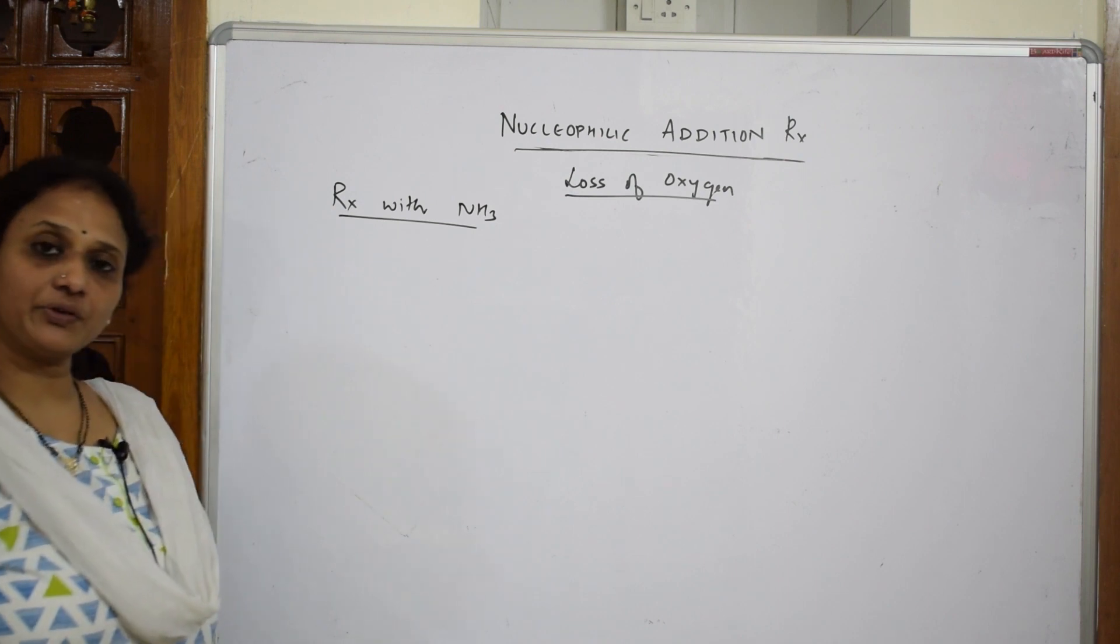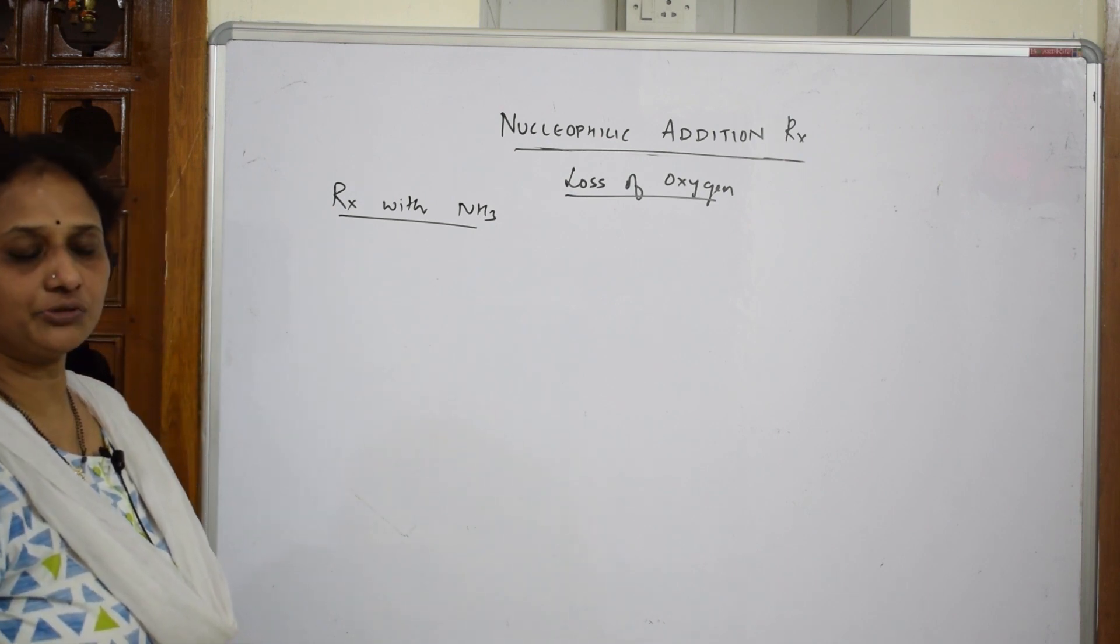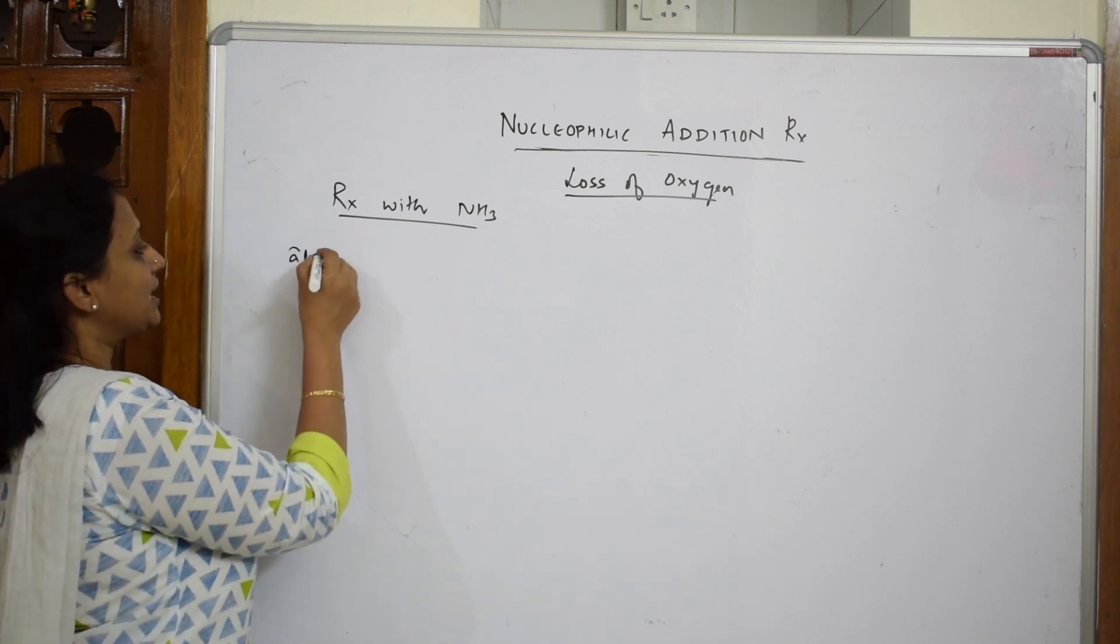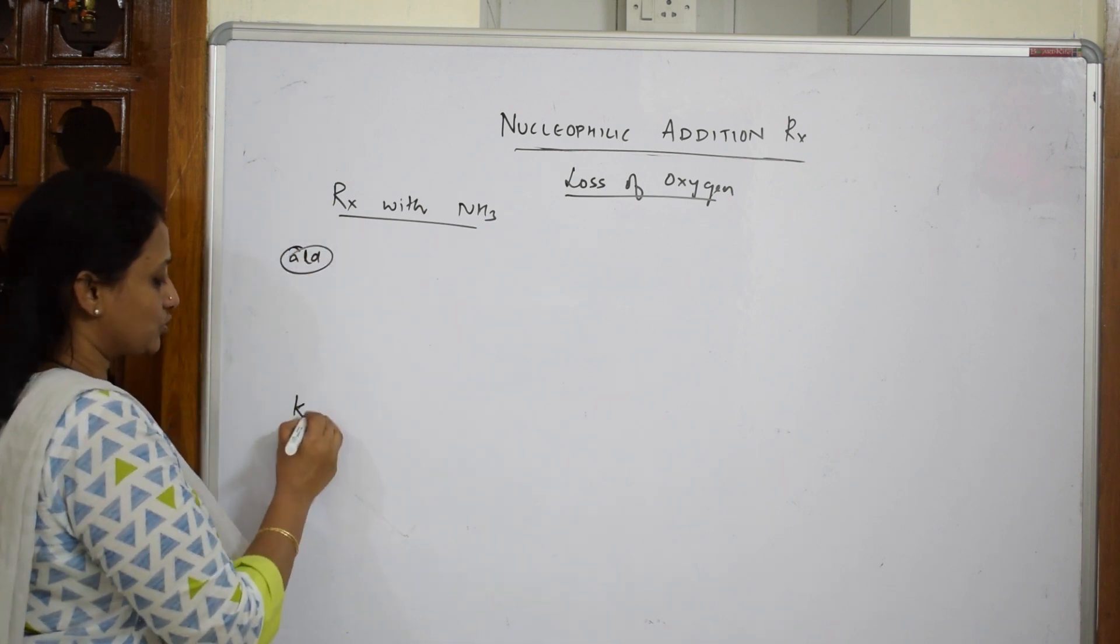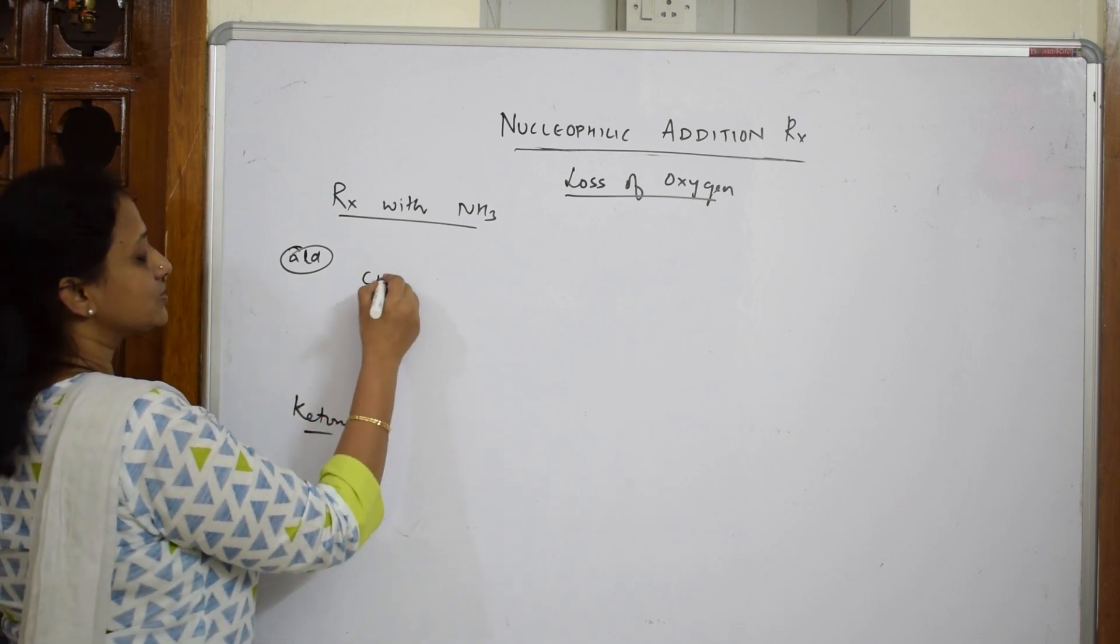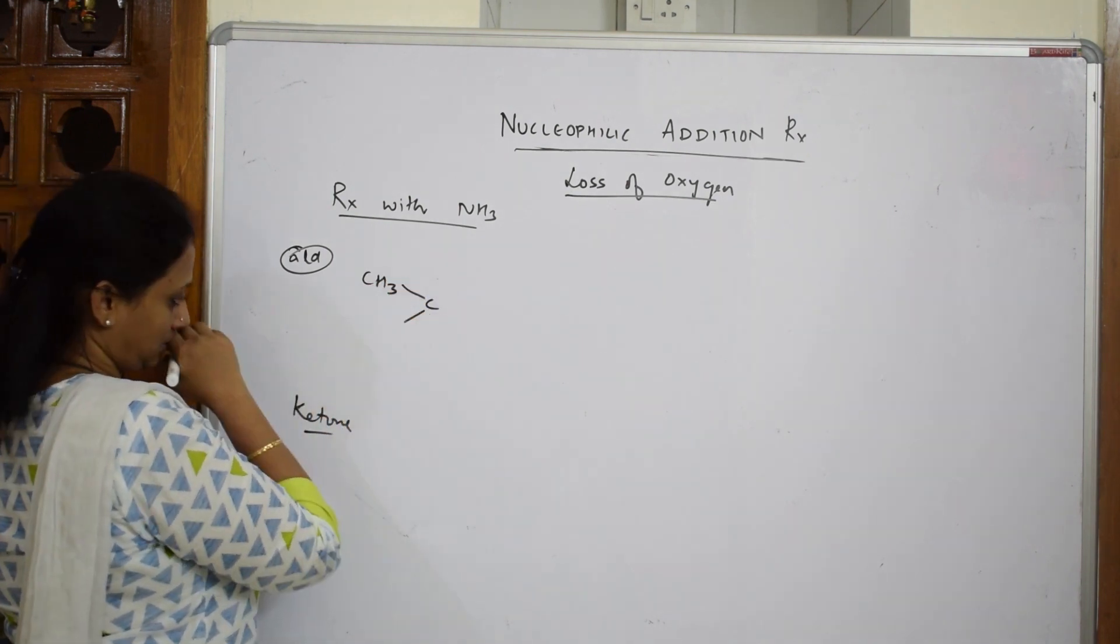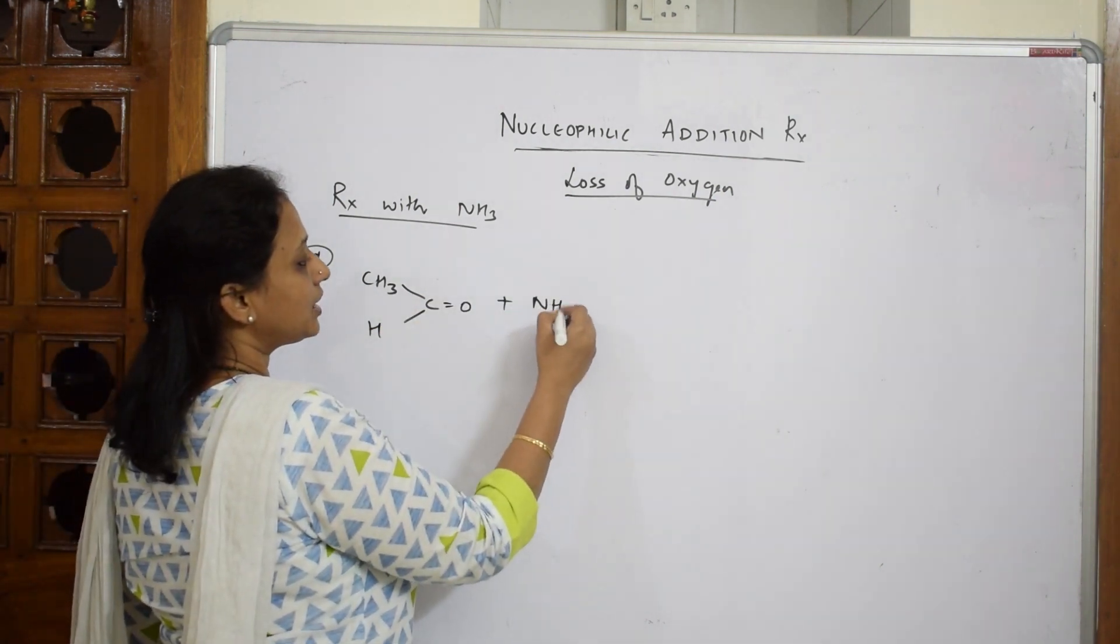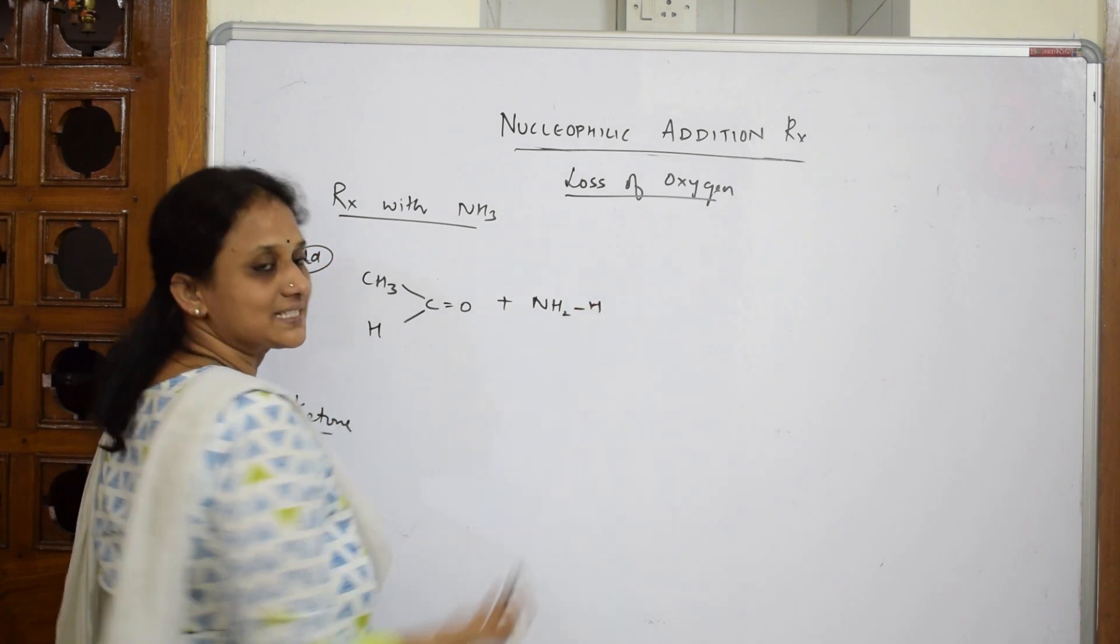What are we going to do? We are going to take an aldehyde and a ketone and see how they react with ammonia. When I take an aldehyde, CH3-CH with oxygen, and your ammonia. Can I write ammonia in this way? It is the same.